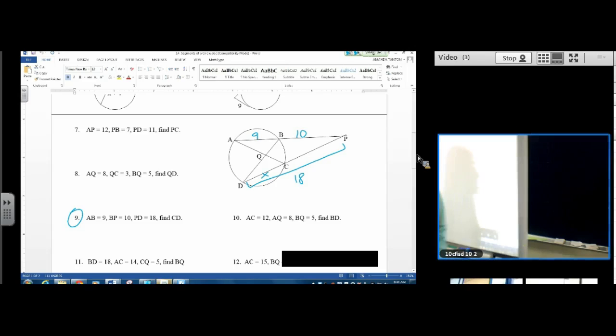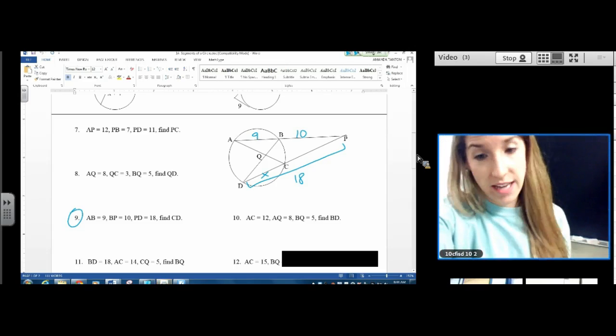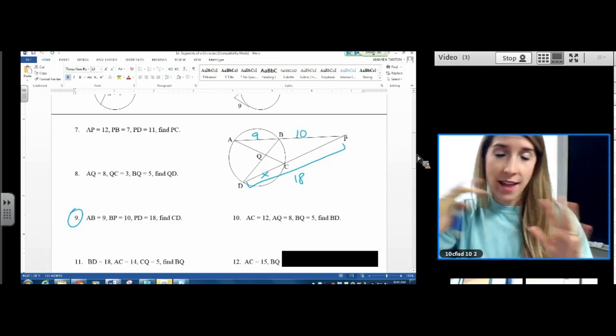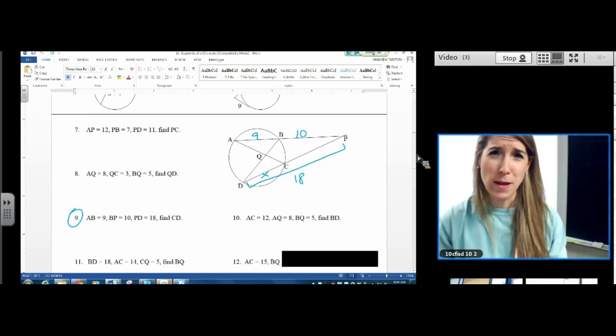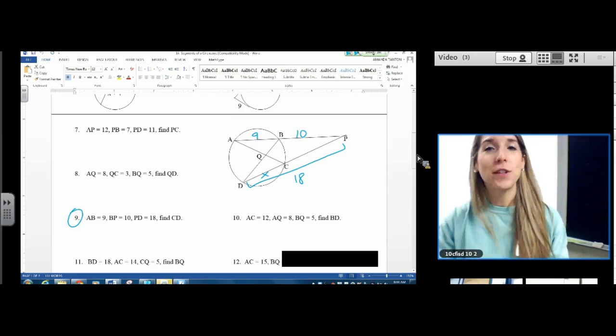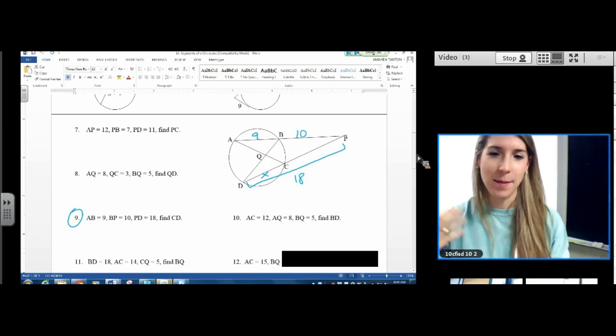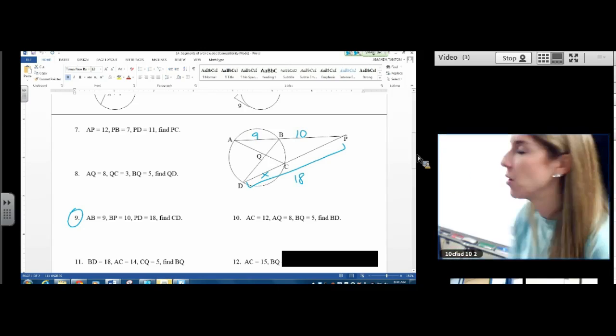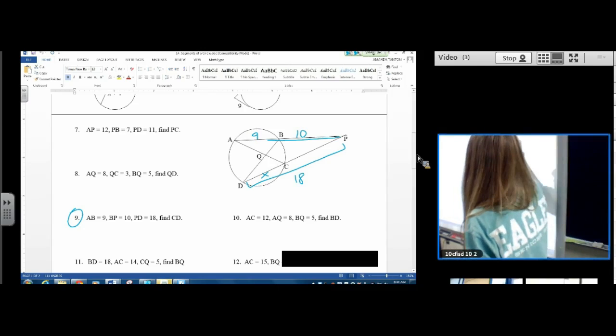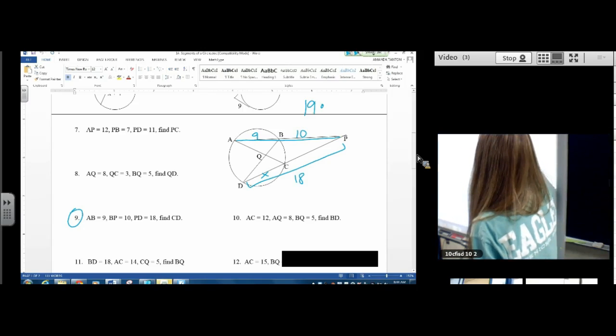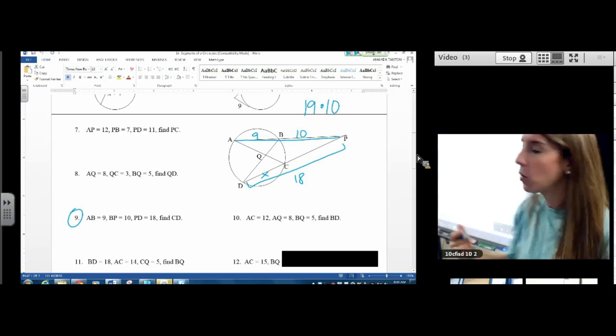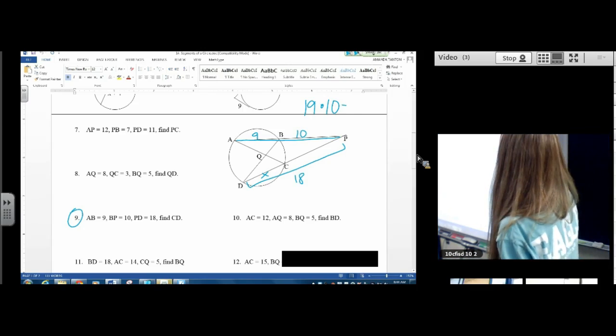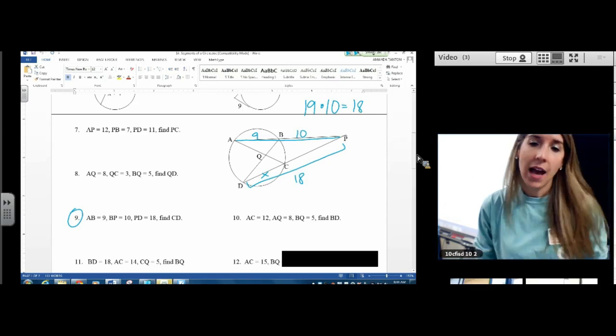Since our chords are technically our secants, since we're going outside the circle, we're going to use the second formula we learned yesterday. I nicknamed it the wee-wee formula. Whole times external equals whole times external. Okay, so what is the whole? It is 19. What's the external? It's 10. Equals whole 18 times external.